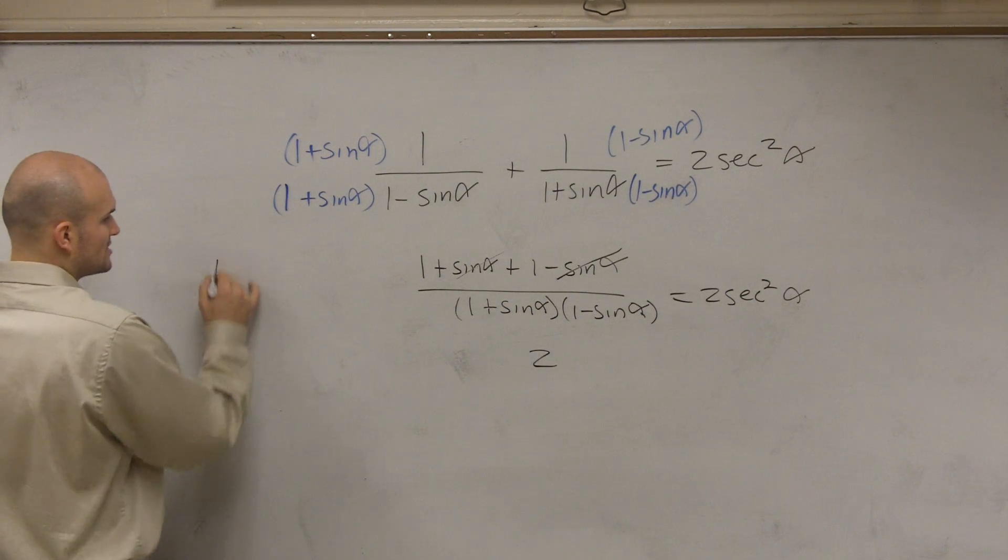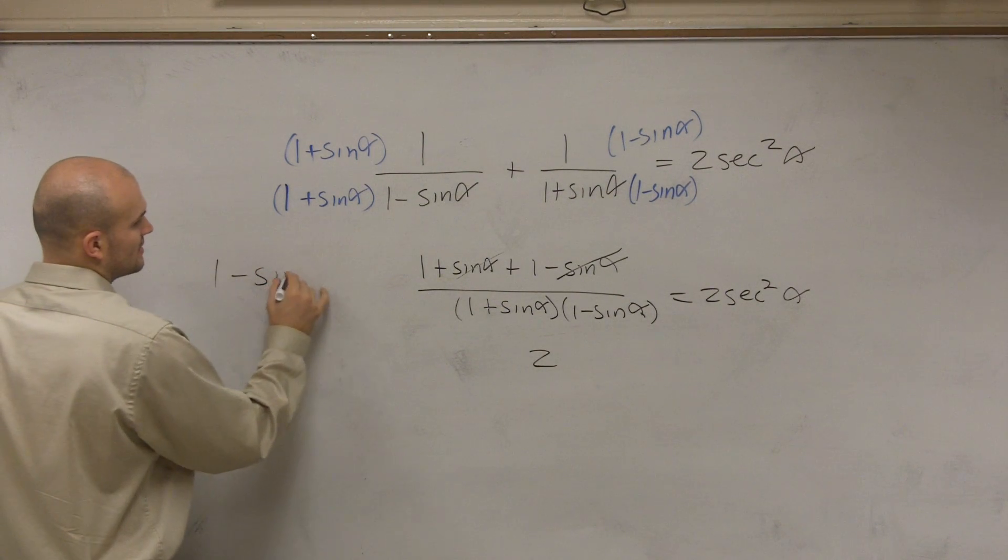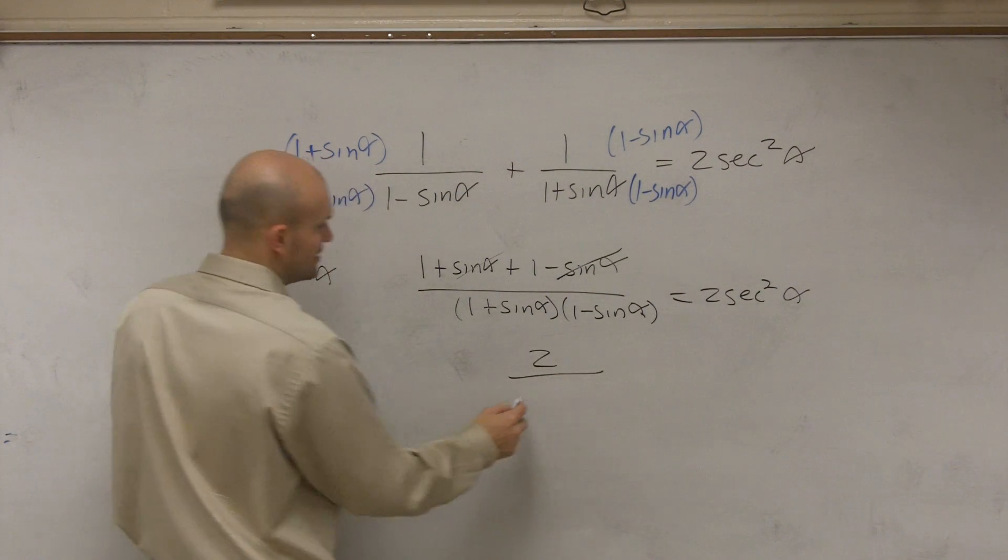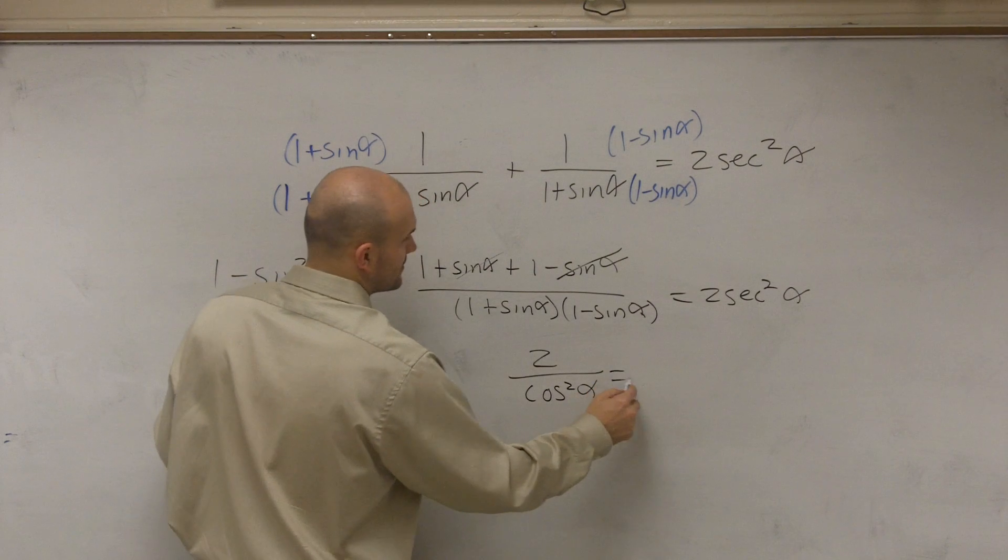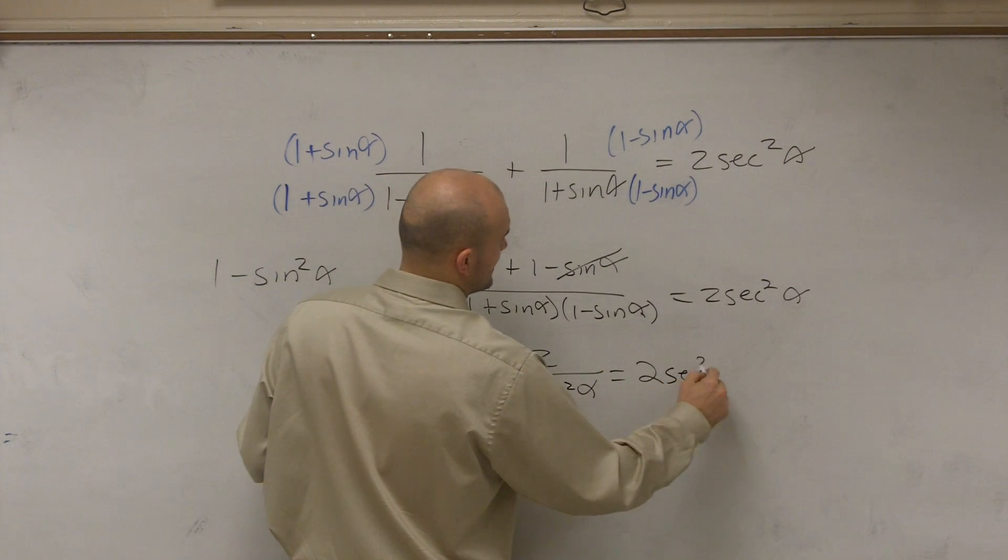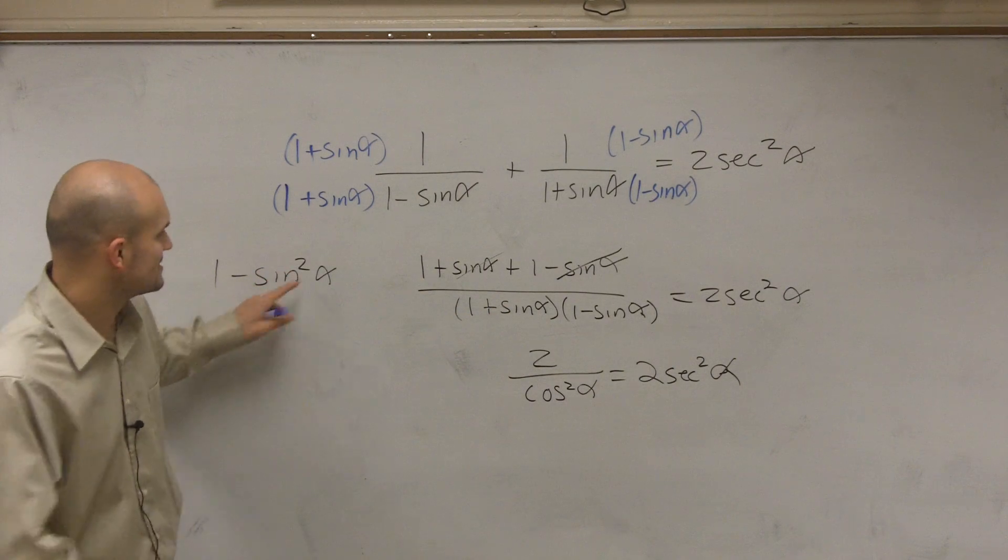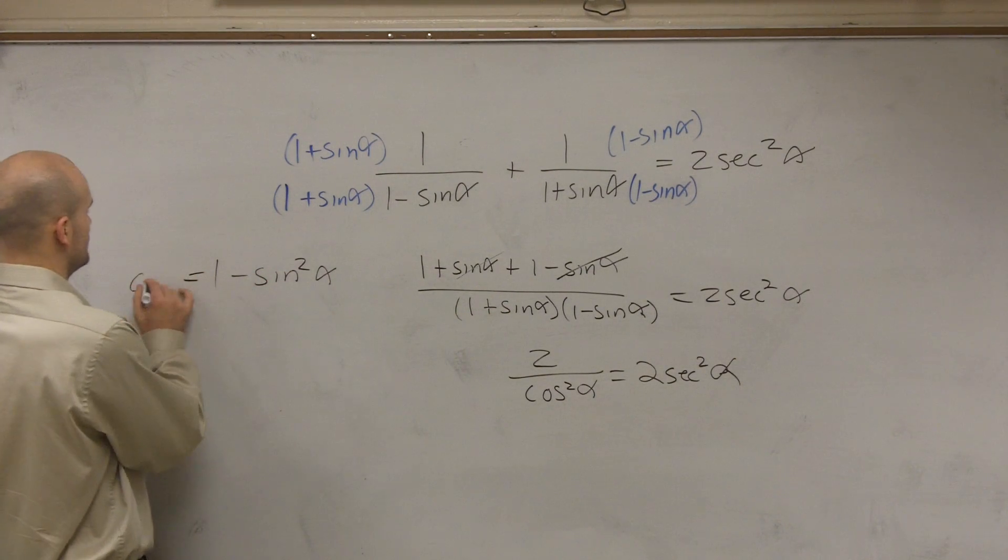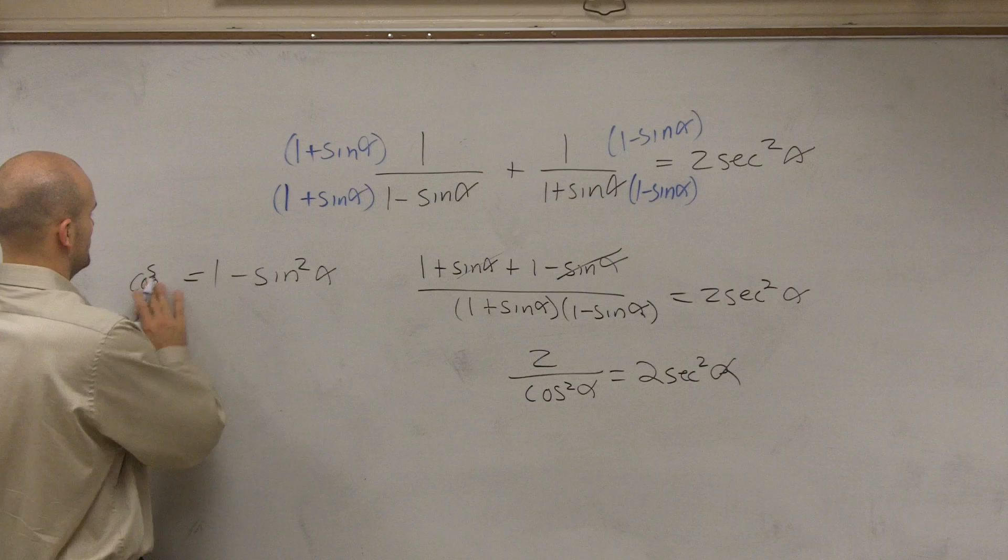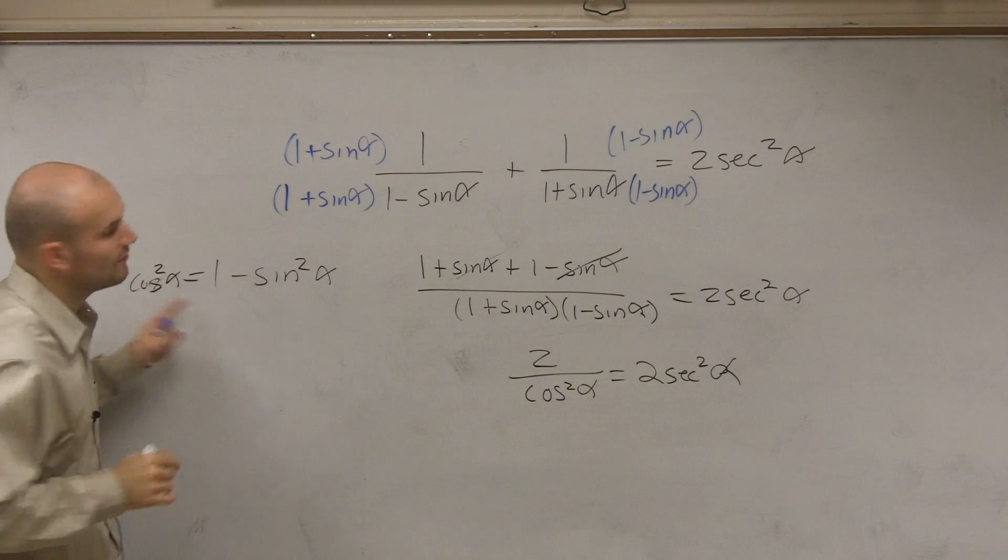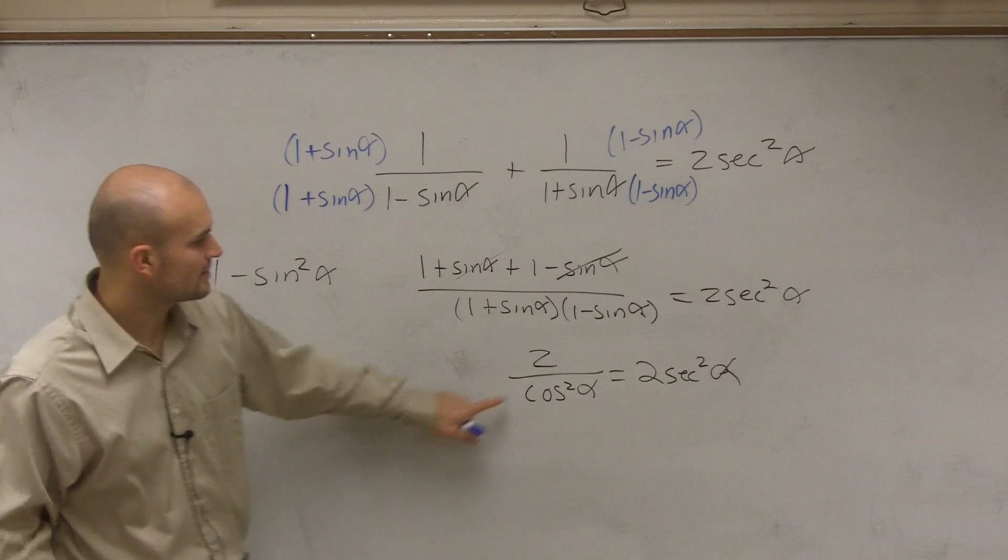Since that's a difference of squares, that's going to leave me with 1 minus sine squared of alpha, which we know is cosine squared of alpha, which equals 2 secant squared of alpha. Again, the reason why we get from 1 minus sine squared, we know that's going to equal cosine squared of alpha because of our Pythagorean identities.